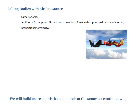Now consider what happens when there are additional forces, such as air resistance. Gravity acts downward proportional to mass, and air resistance acts in the opposite direction. A simple assumption is that air resistance is proportional to velocity: the faster you fall, the harder the air pushes back against you. So we model air resistance as proportional to ds/dt.